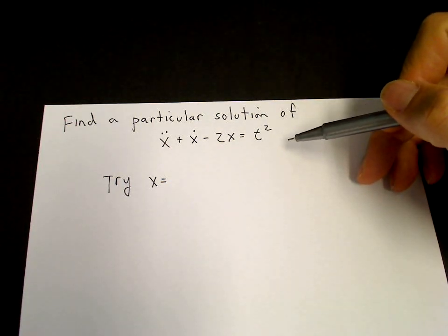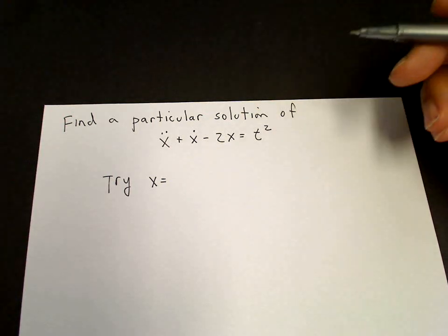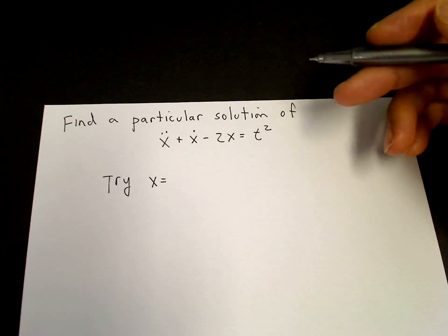And we'll end up, if you try it, with three equations and only one unknown, an overdetermined system of equations.